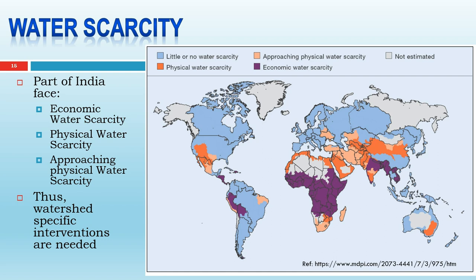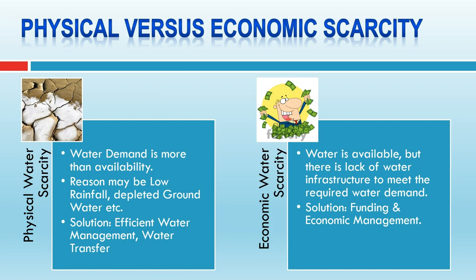Physical water scarcity means water demand exceeds water availability, due to low rainfall or depleted groundwater. The solution is efficient water management and water transfer from surplus basins to scarcity basins. Economic water scarcity means water is available in the basin but there is a lack of water infrastructure to meet demand. The solution requires funding and technical infrastructure building. For a country like India, there should not be a uniform policy for the entire country — watershed or river basin-specific interventions are required.